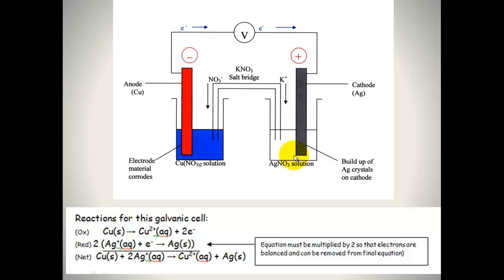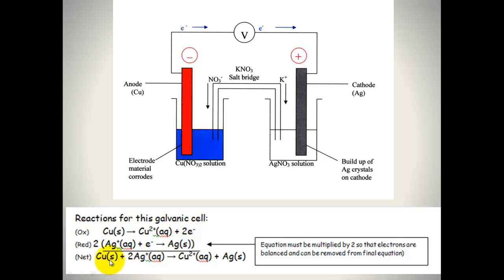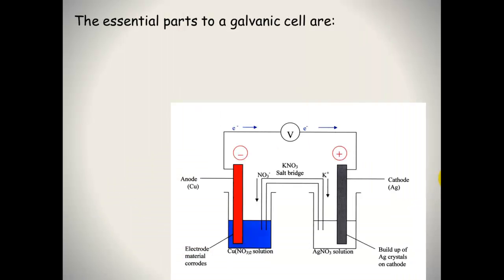This cathode here is made of silver. What's happening is that silver ions are coming out of the silver nitrate solution and reacting with the electrons coming down to form silver solid, so you get a build-up of silver crystals on the cathode. These two half equations can be added together to get a full redox reaction.